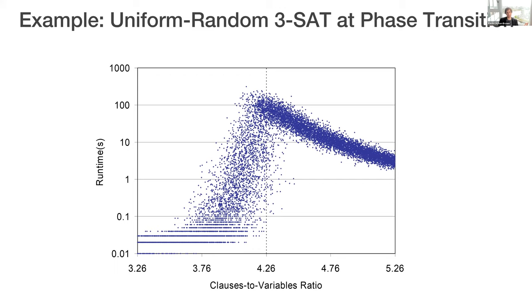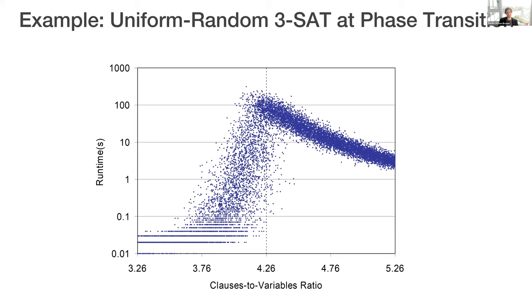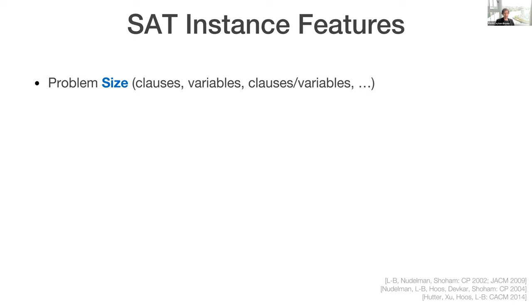So some co-authors and I got interested in the somewhat ridiculous question of saying, could we use machine learning to try to predict which kind of instance we've got in hand? If we were at this phase transition point, if we had some well-defined set of instances, and we wanted to take some new instance from this set and try to determine, is it going to be hard or easy to solve? And so in a whole string of work culminating in a CACM paper in 2014, we said, let's try to find some instance features of a SAT instance that we could compute in polynomial time that would give us a handle on its combinatorial structure that we could then use in a model to try to predict whether the instances is hard or easy.